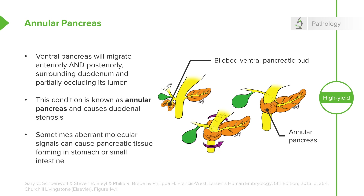Because the pancreas develops from endoderm at a specific location due to local signals, those signals can also induce the formation of pancreatic tissue in other places, such as the small intestine or the stomach.